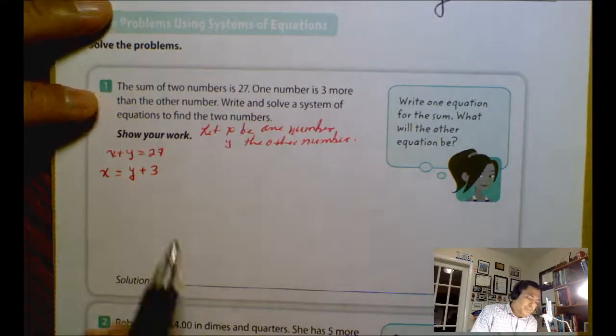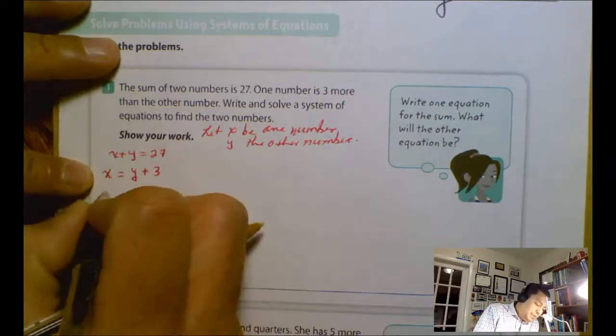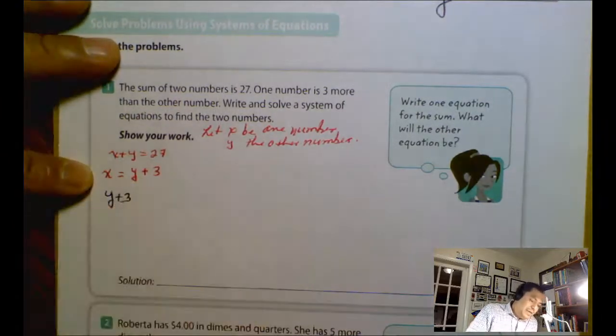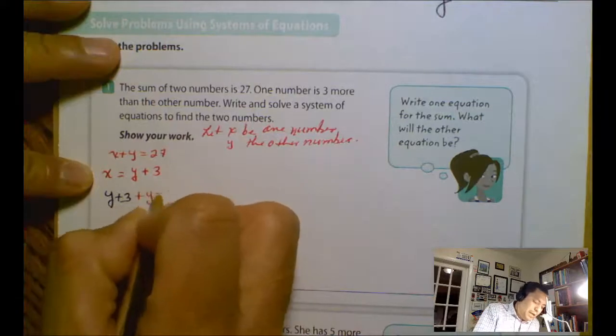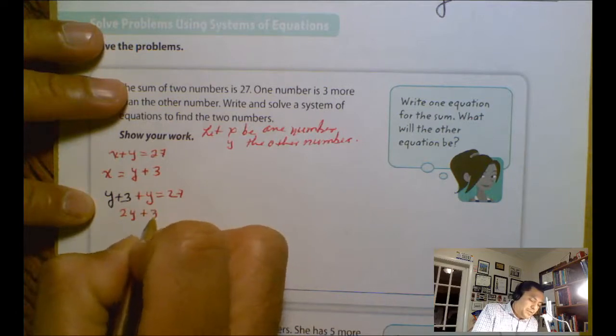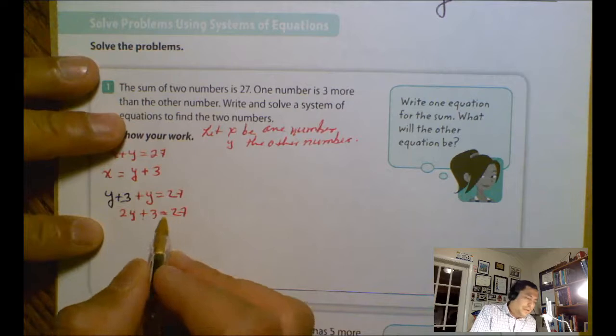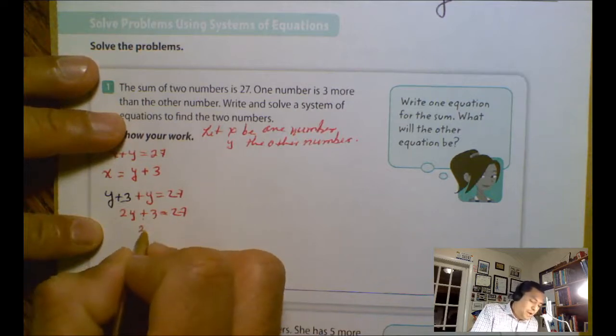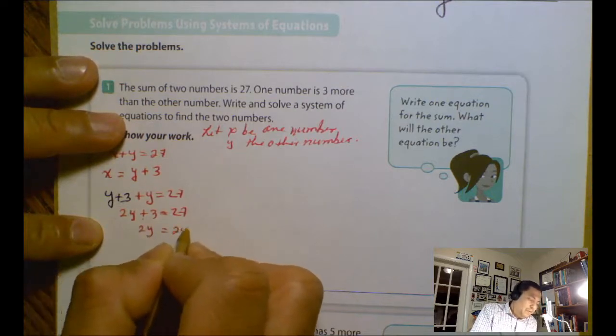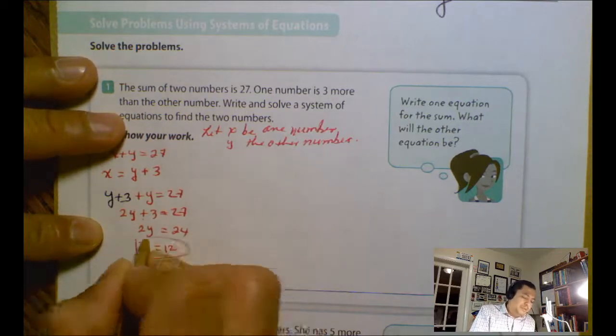We're going to apply substitution. You can see x is already solved. So I'm going to have y plus 3 plus y equals 27. So y plus y is 2y plus 3 equals 27. Then minus 3 minus 3, so we have 2y equals 24. Then we divide by 2, so y equals 12. The first number is 12.